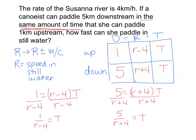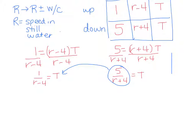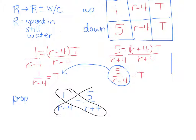So now it's a system of equations in two variables. Since they're both equal to T, I can substitute one in for the other. So now I've got 1 over R minus 4 equals 5 over R plus 4. What I'm hoping you're recognizing now is what type of equation this is — it's a proportion. And to solve a proportion, we can cross multiply.